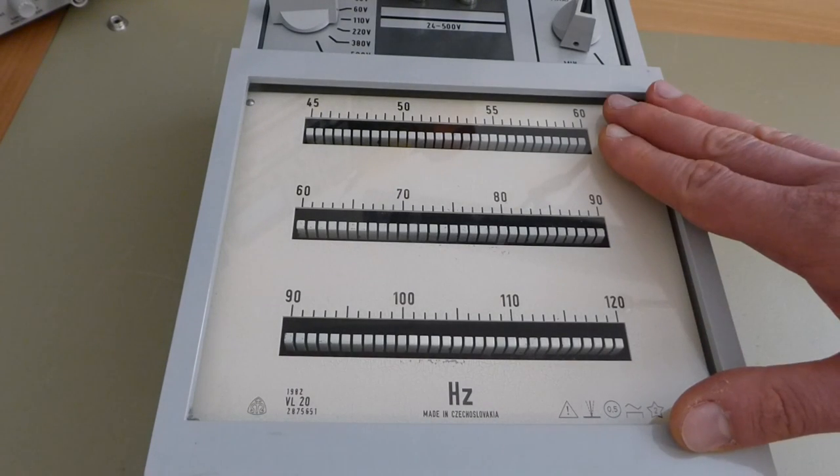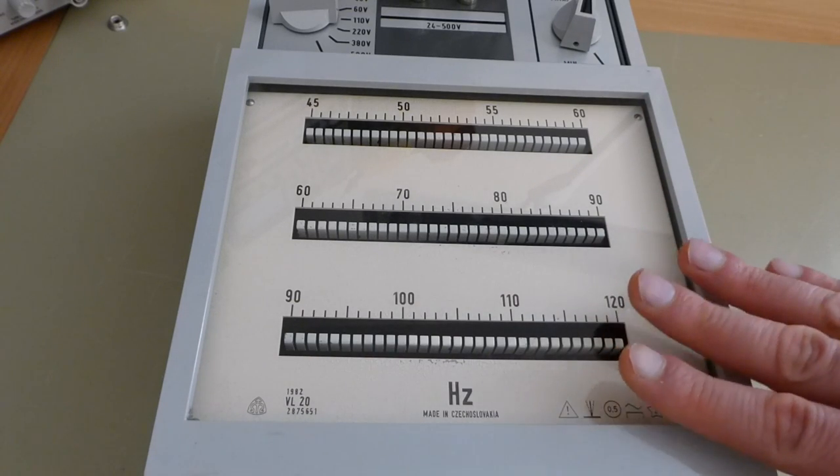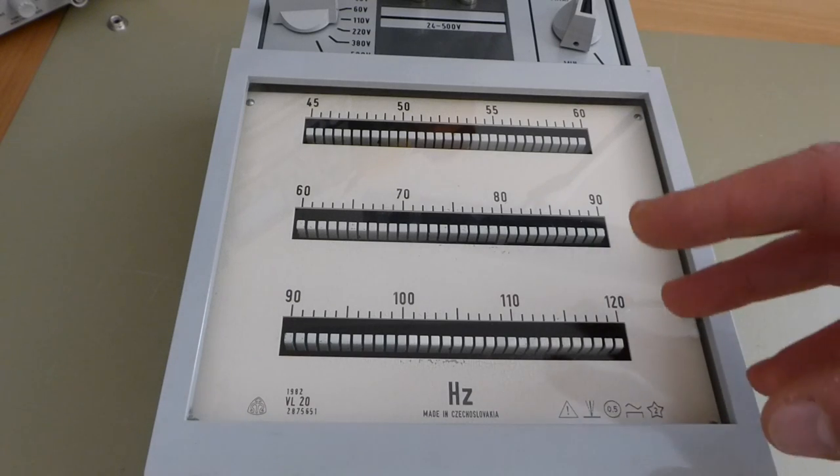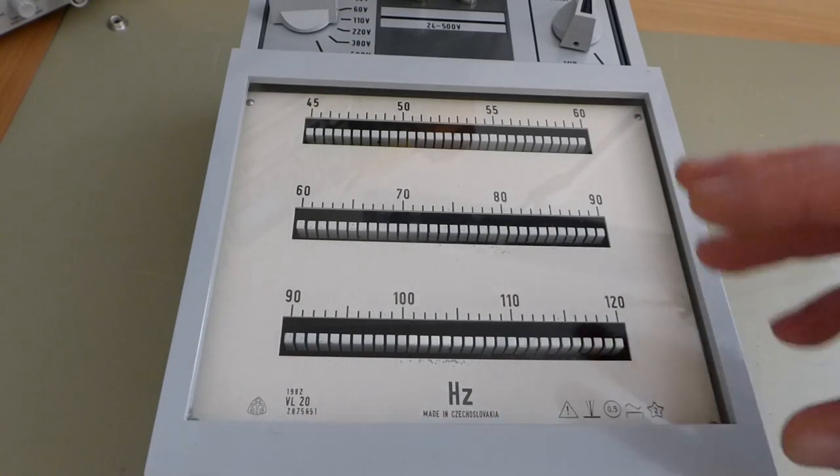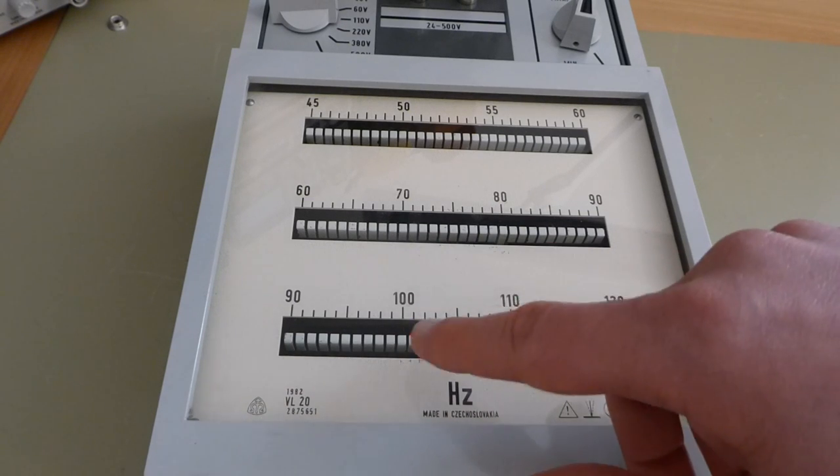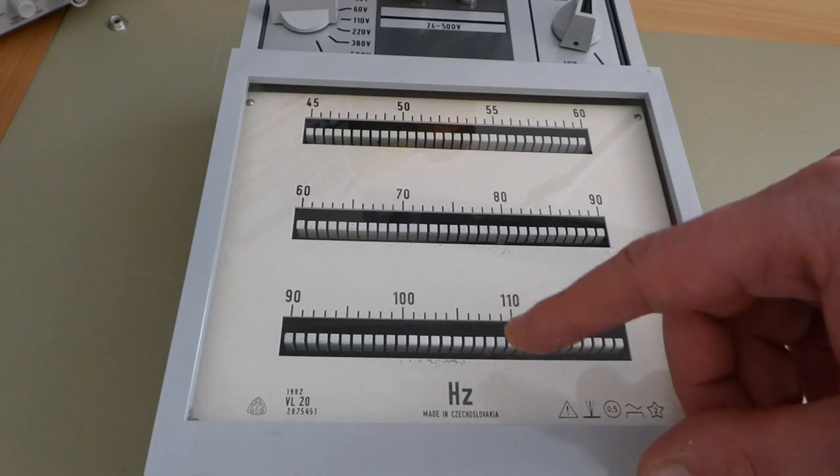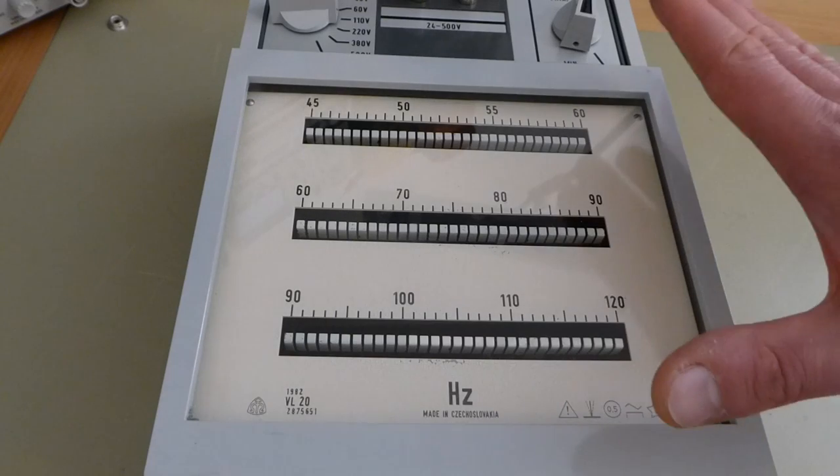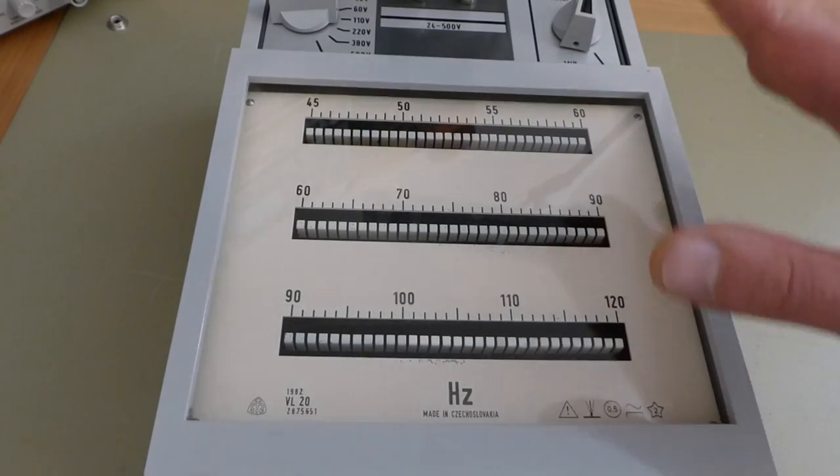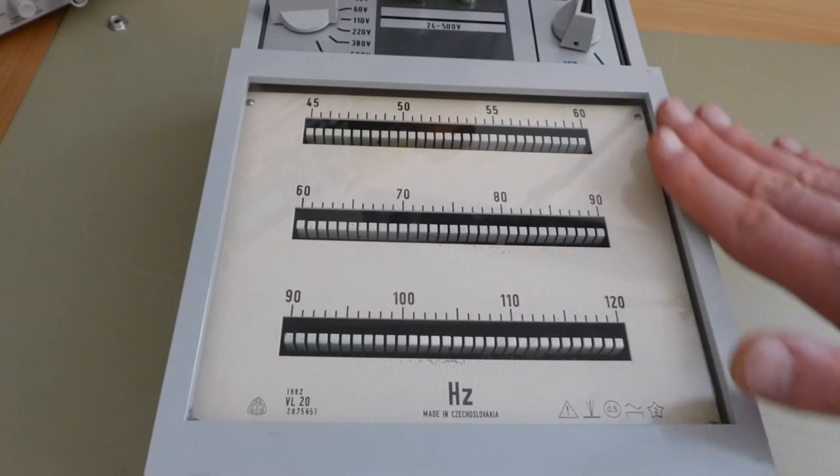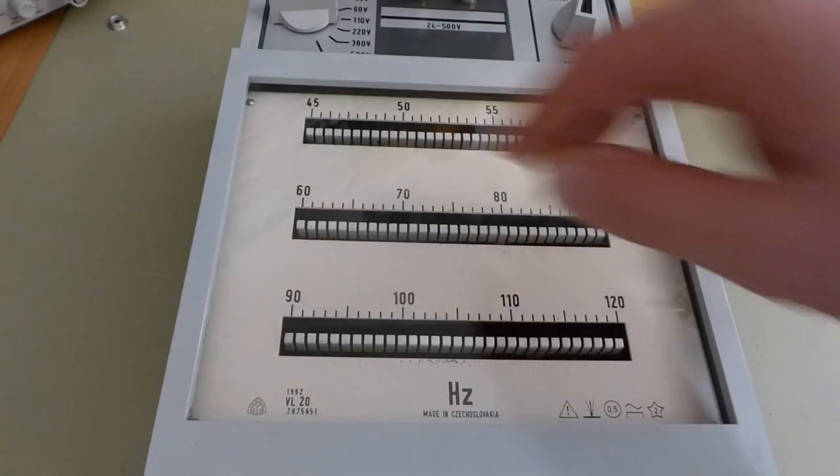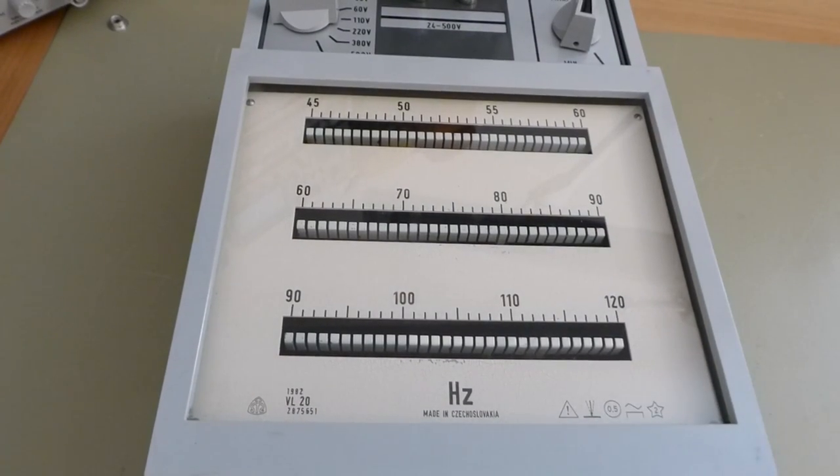And this unit here is quite special. Those things were mostly used in generating stations and places where you need to know your mains frequency. So usually your frequency meters would only have a small number of reeds going from 45 to 55 Hz or something like that, just to give you an indication where your mains frequency is. Whereas this one goes from 45 to 120 Hz, and it's really large. So I suspect that this one must have been used in some sort of school or university physics lab, something like that, just from the size, the frequency range, and it just looks like something you would find in a physics class.